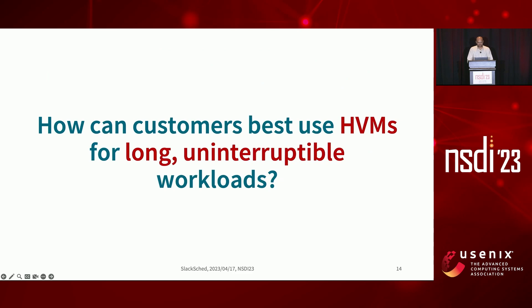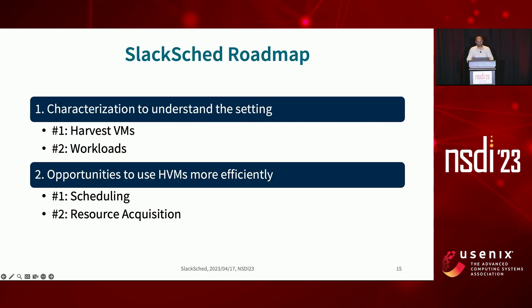And so in this work, we ask: how can customers make the best use of harvest VMs for executing these long, uninterruptible workloads? We answer this question by building our system called Slackshed. We began by characterizing harvest VMs and workloads to understand their behavior and see how they may interact. Our characterization revealed opportunities to improve workload execution, using which we designed harvest VM-aware scheduling and resource acquisition components.